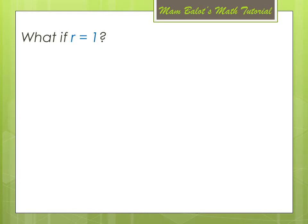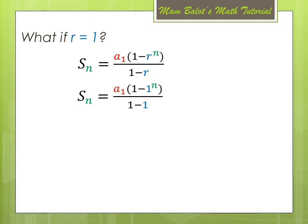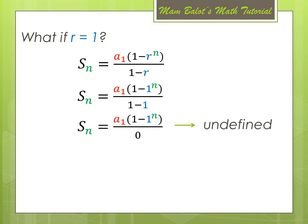Now, what if r is equal to 1? If we substitute 1 into the formula, the denominator becomes 1 minus 1, which equals 0. Since the denominator is 0, the result is undefined. So we cannot use this formula if r is equal to 1. Instead, the formula for S sub n when r equals 1 is simply n times a sub 1, since you are just repeating the first term n times.